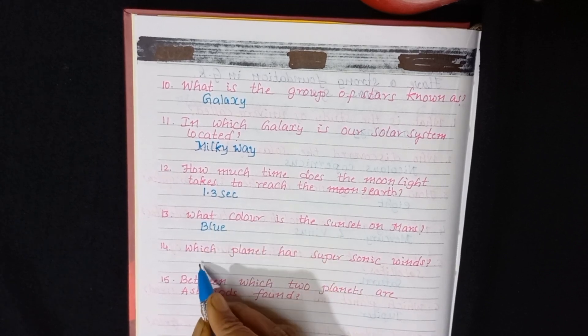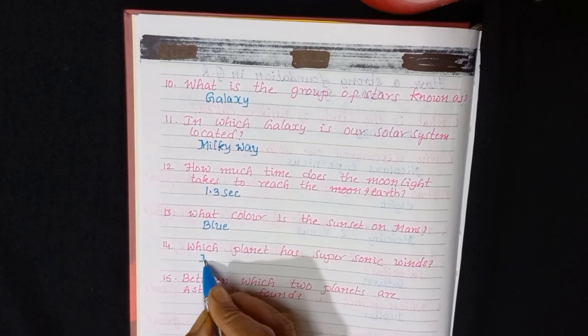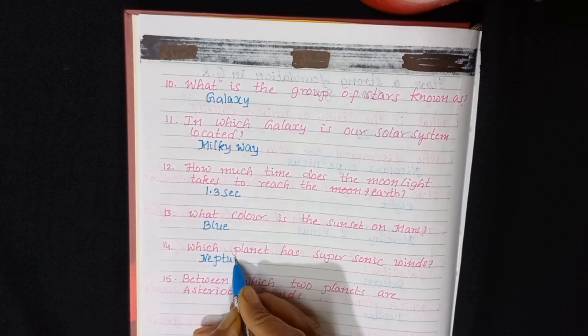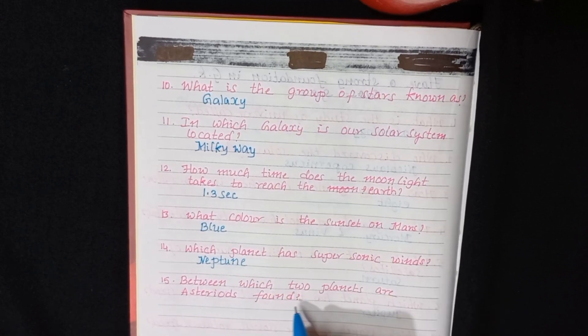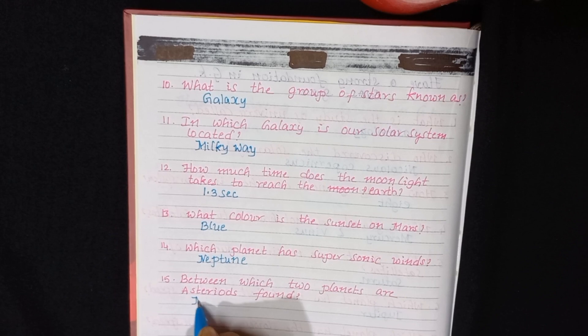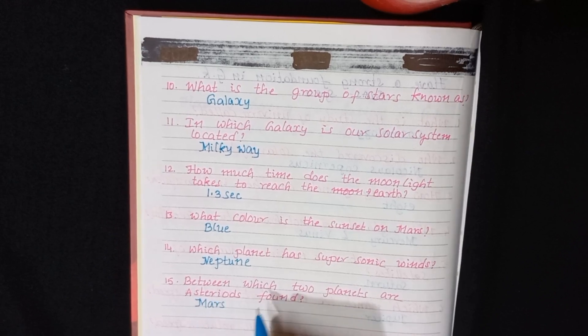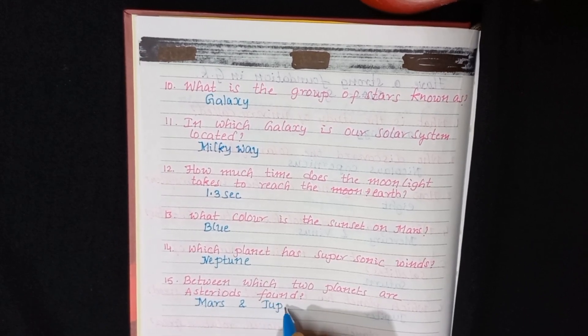Which planet has supersonic winds? Neptune. Between which two planets are asteroids found? Mars and Jupiter.